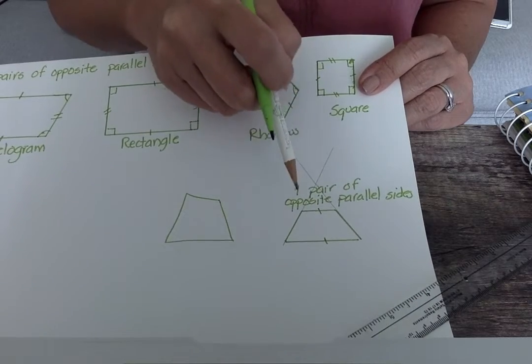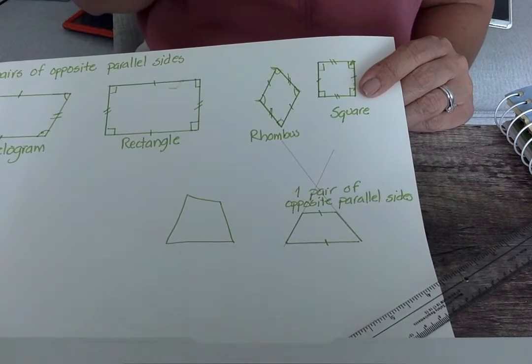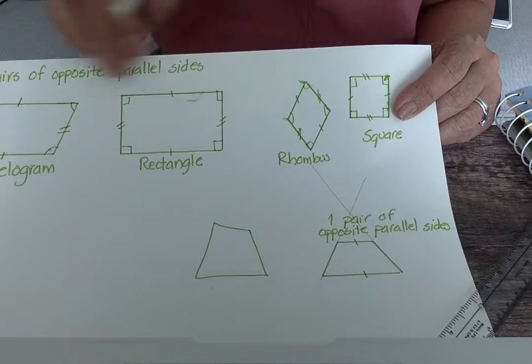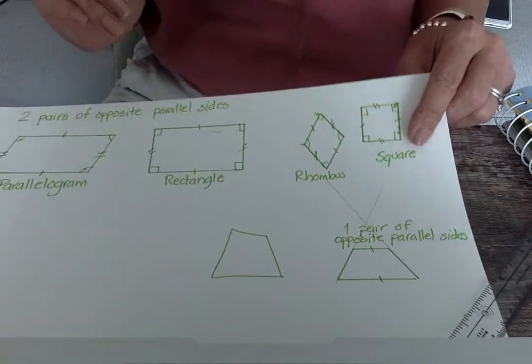So a trapezoid only has one pair of parallel lines, and these other ones have two pairs of parallel lines.